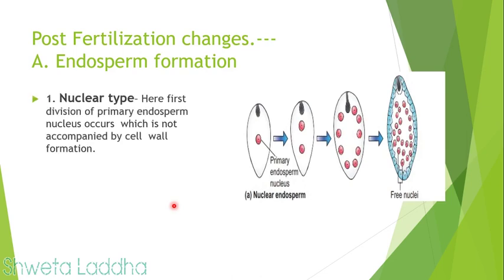First is the nuclear type. The primary endosperm nucleus, formed as a result of double fertilization, is triploid. It divides to form two nuclei with no cytoplasmic division — only nuclei divide repeatedly within one cell, producing many nuclei. At the end, cytoplasmic division or cytokinesis takes place. So in nuclear type, many nuclei are formed first, and cytokinesis occurs only at the end.